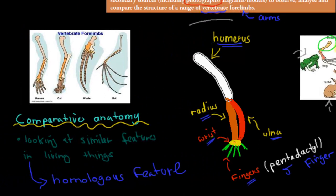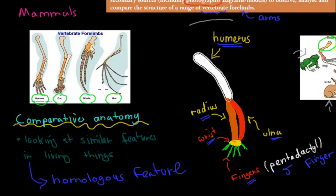If we compare our arms to the arms of different mammals, we'll find quite a few similarities. The mammals we're looking at are humans, cat, whale, and bat. Some might be surprised — how are a whale and a bat mammals? A whale looks like a fish, but the definition of a mammal is that they bear live young. Whales don't lay eggs, they bear live young, so a whale is definitely a mammal. And a bat is not a bird — it's much more closely related to a rat than a bird. So both a bat and a whale are mammals.